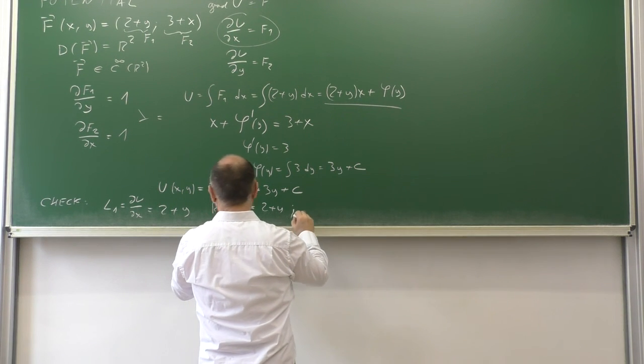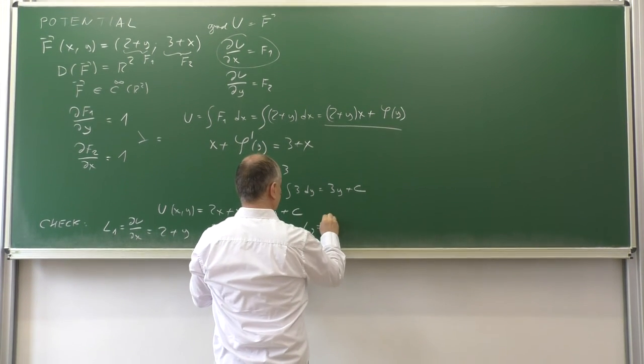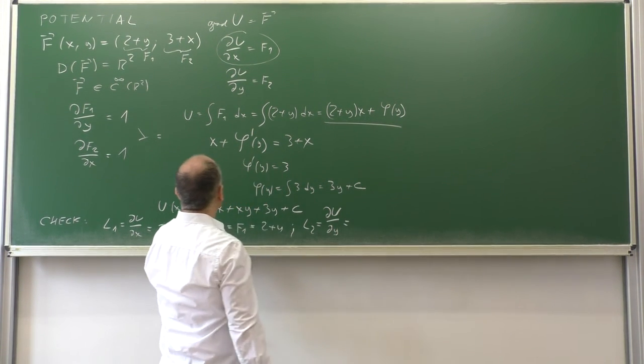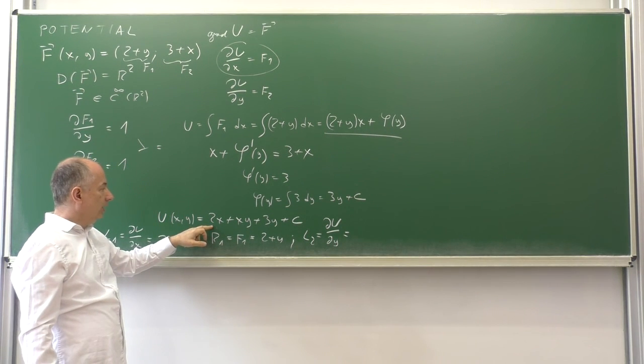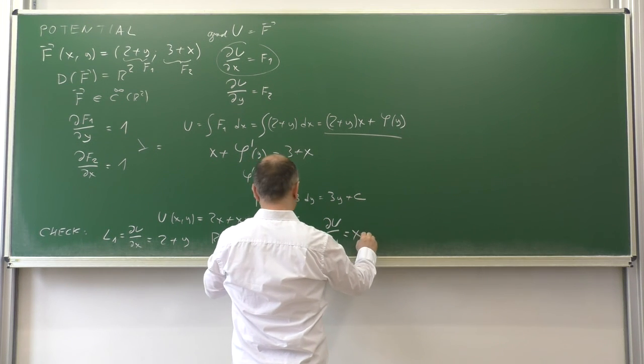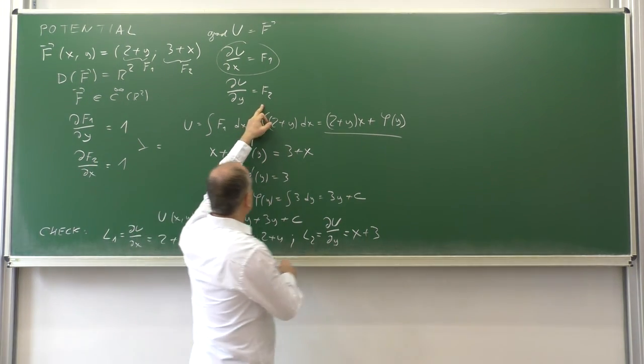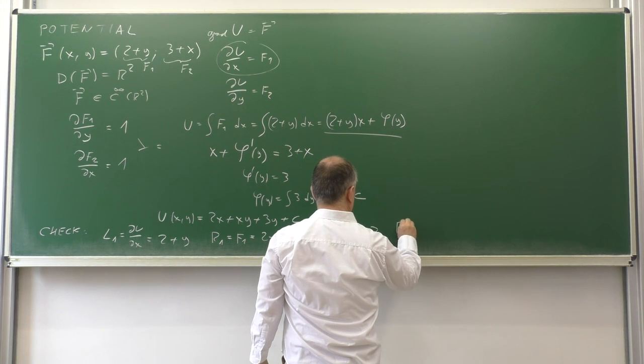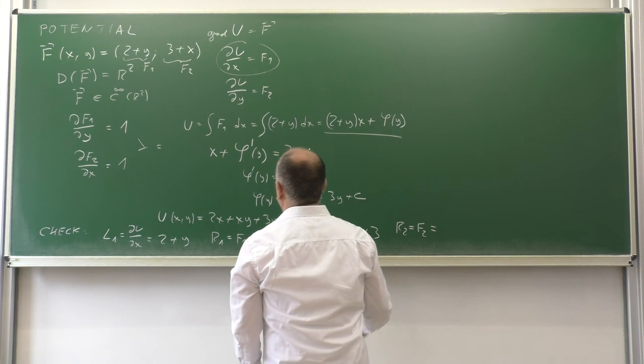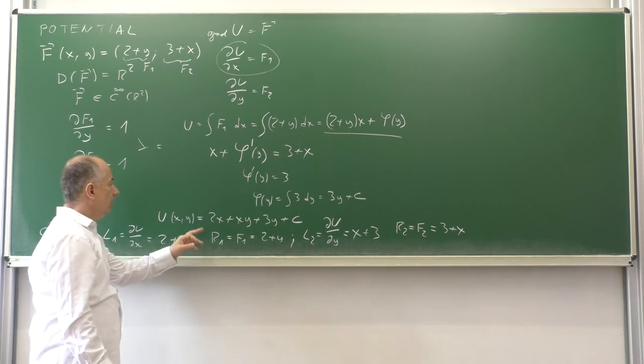On the left of the second equation we have ∂u/∂y. When we differentiate our result with respect to y, we have 0 plus x plus 3 plus 0. On the right of the second equation we have F2, which is 3 plus x. Yes, the same. So this is indeed the potential.